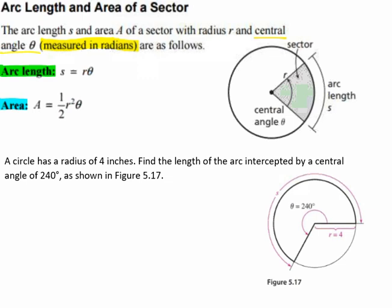Here we have a circle which has a radius of 4 inches, and we're going to find the length of the arc intercepted by the central angle of 240 degrees. Notice in our picture we have our 240 degrees and our radius of 4.